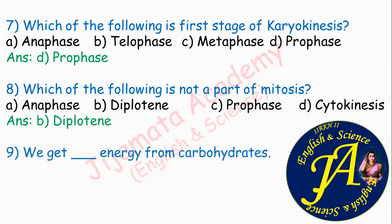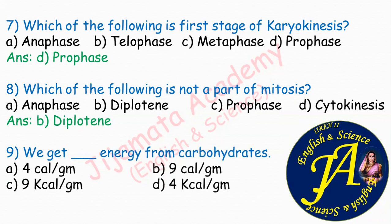We get dash energy from carbohydrates. Options are 4 calorie per gram, 9 calorie per gram, 9 kilocalorie per gram, 4 kilocalorie per gram. Correct answer is option D: we get 4 kilocalorie per gram energy from carbohydrates, and we get 9 kilocalorie per gram energy from proteins and lipids.